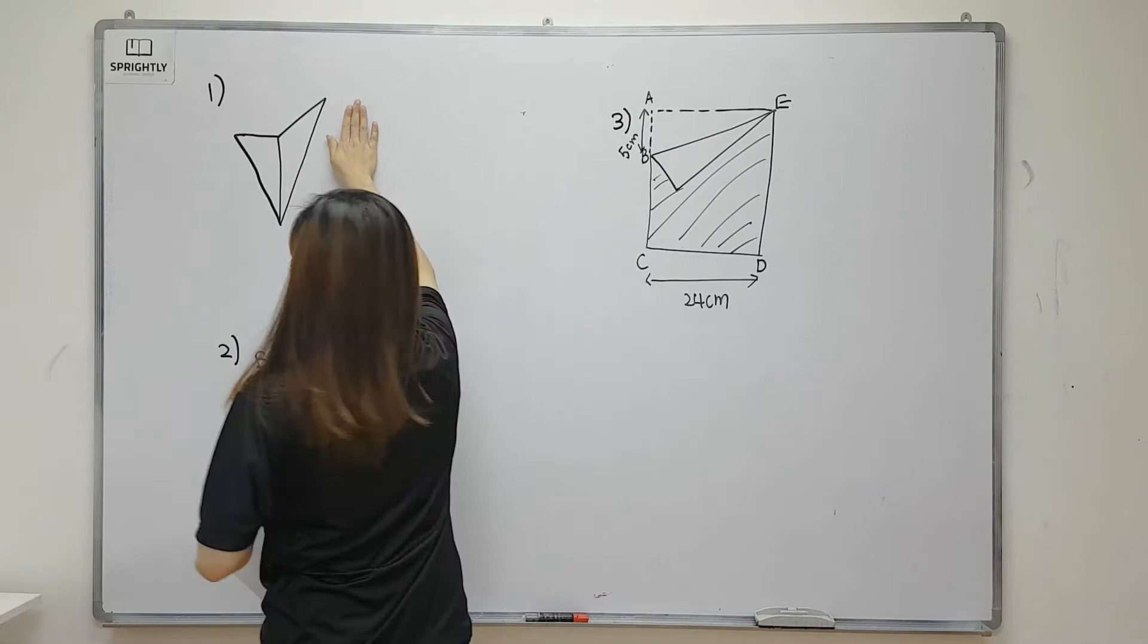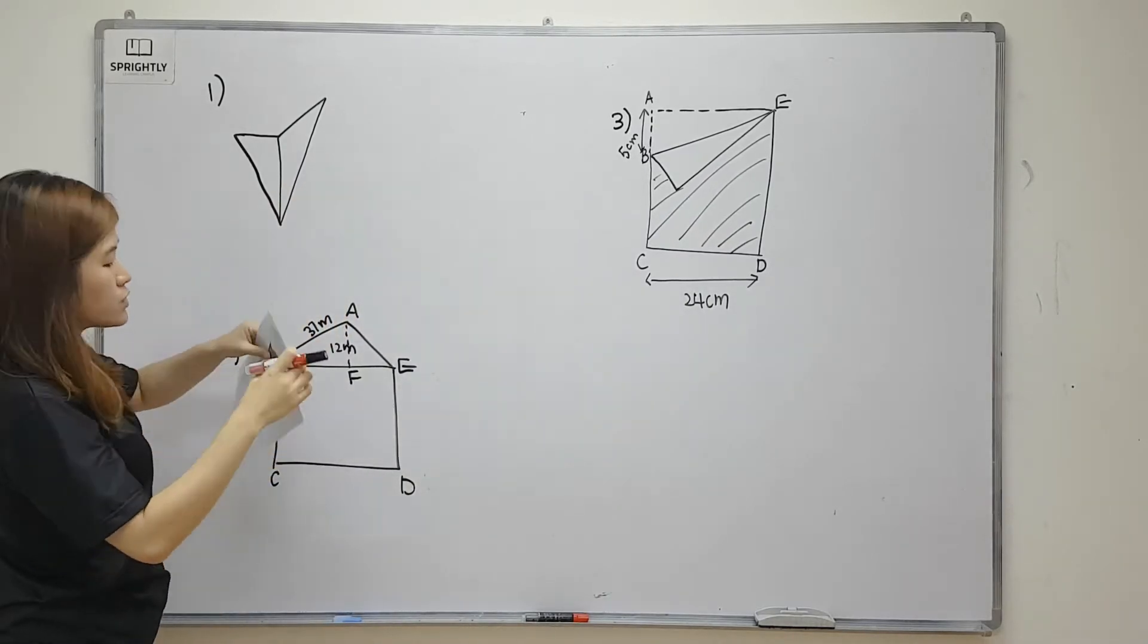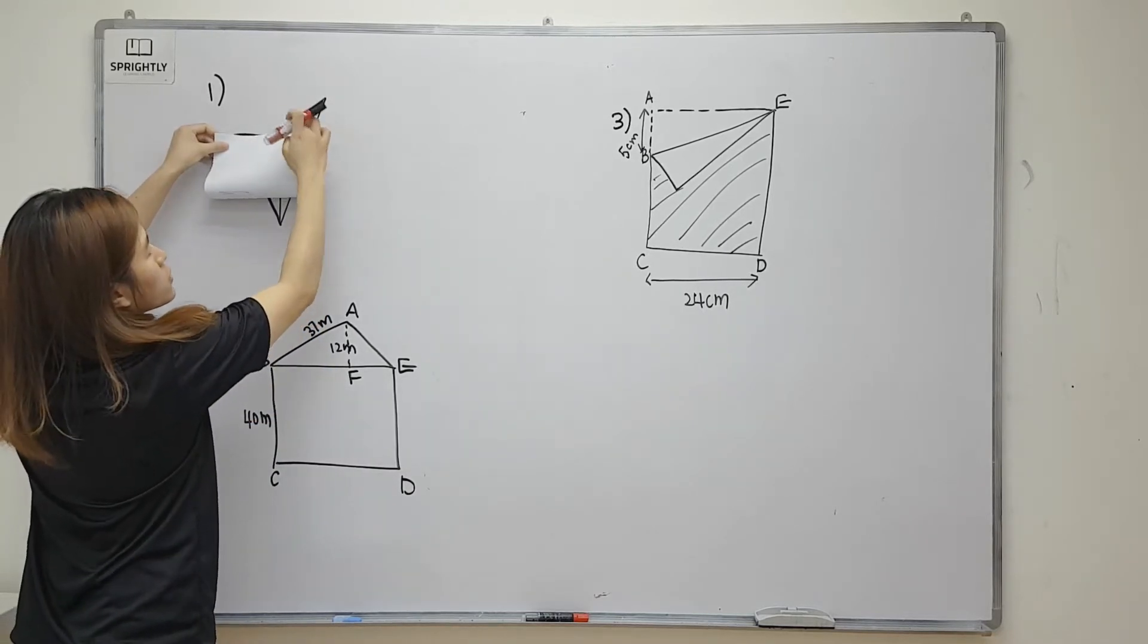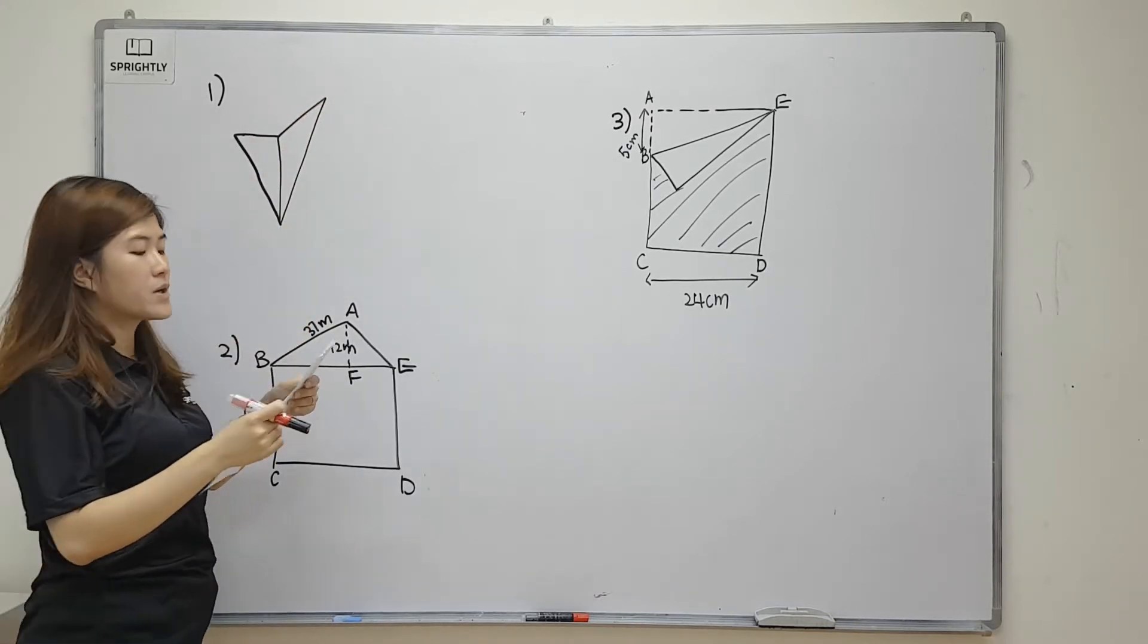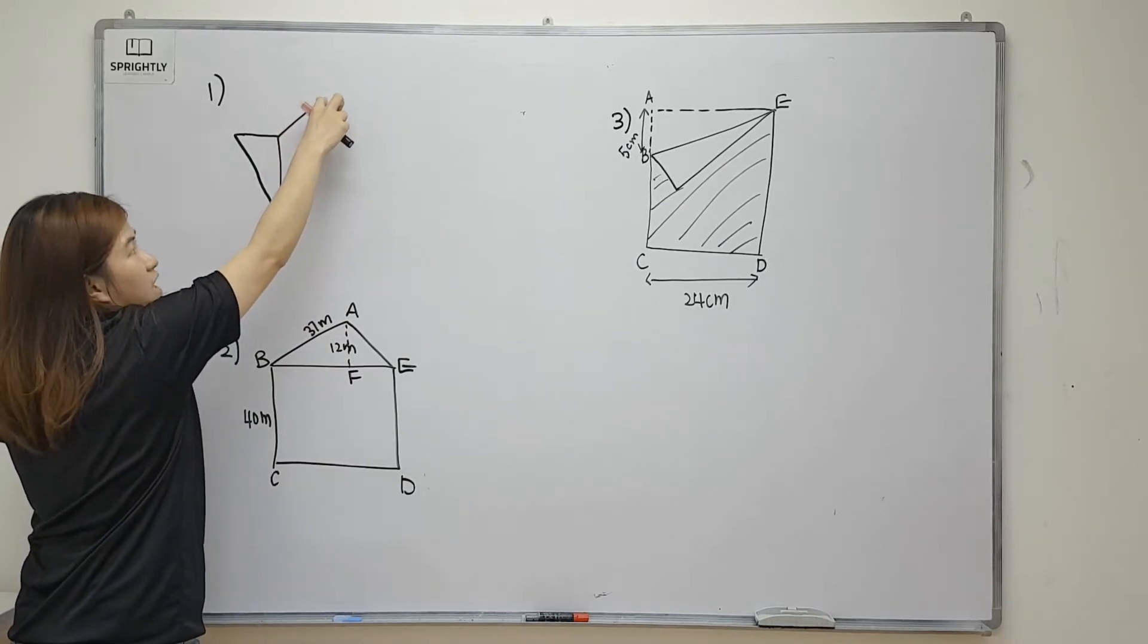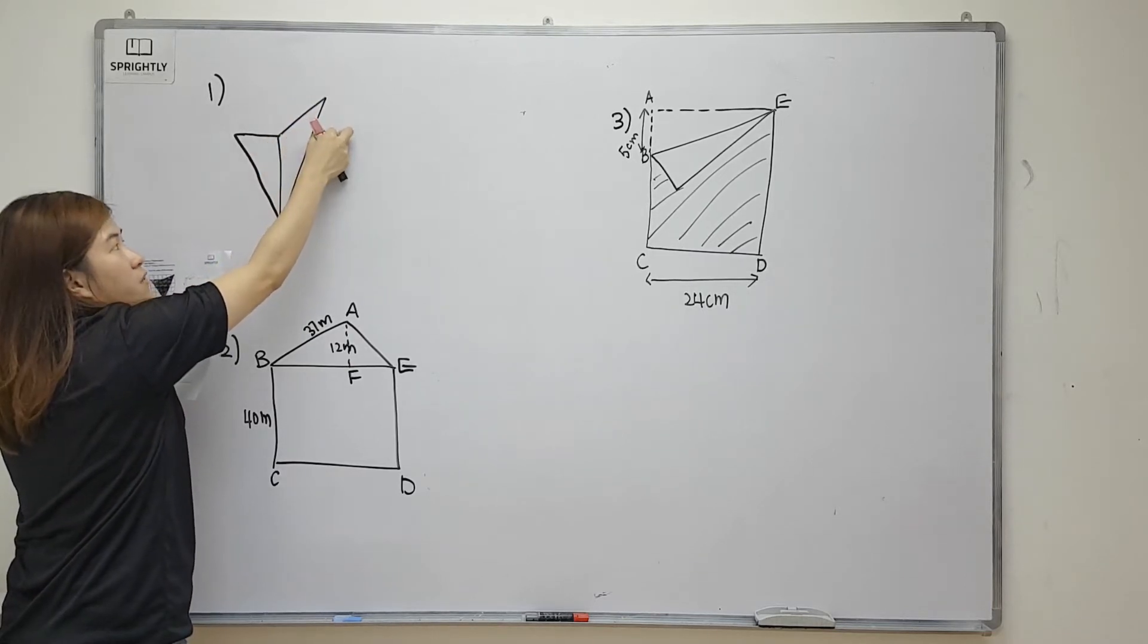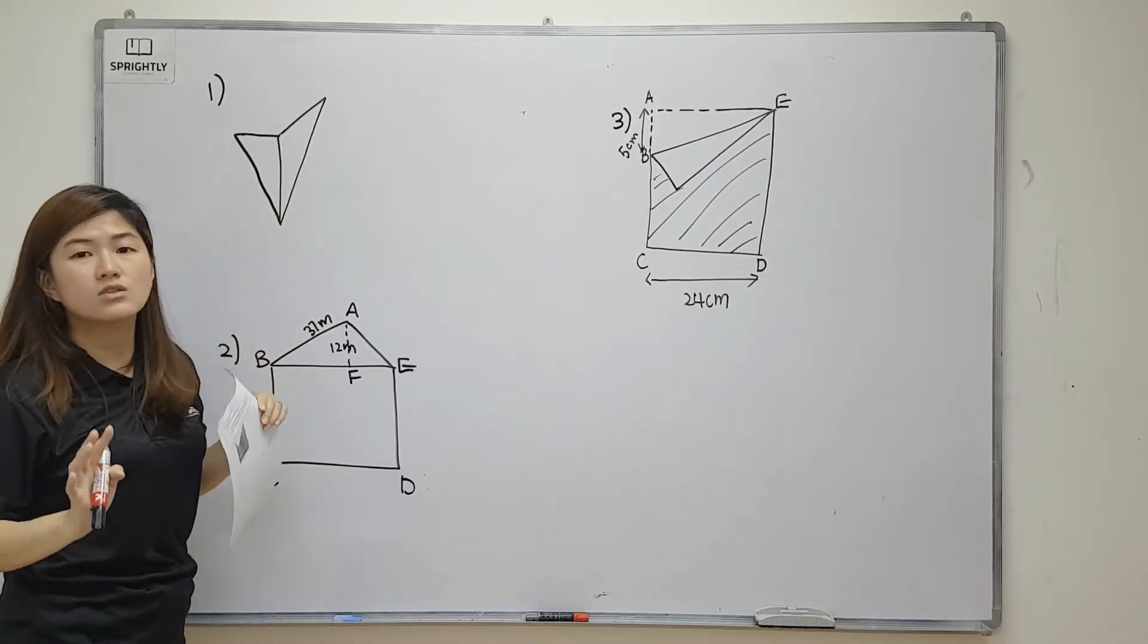For question number one, it might look simple but many of you may have chosen to break up the shape this way - you want to find a small triangle on top, then the bigger triangle below. But it's wrong because if I split it up this way, I'm unable to find the height and the base. The base is actually two and something of a square - you don't know whether it's half or one-third of a square, so we cannot just assume that it's half.